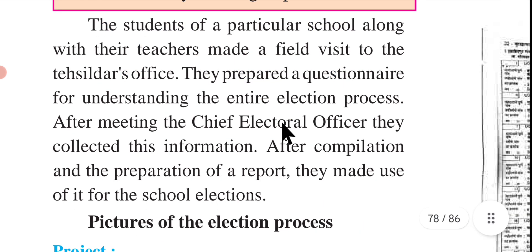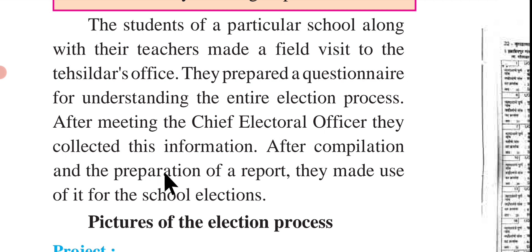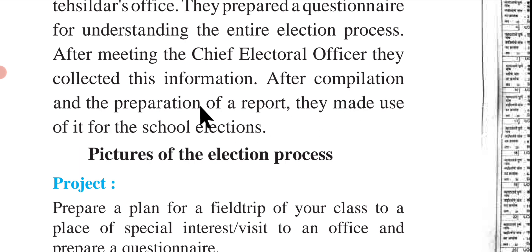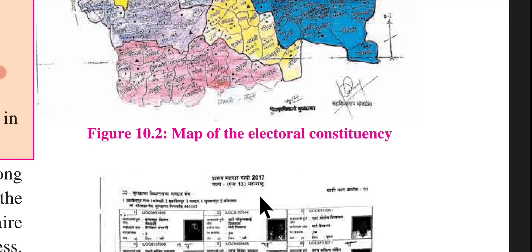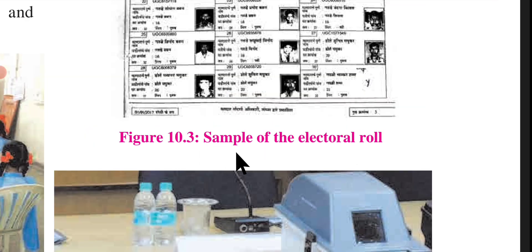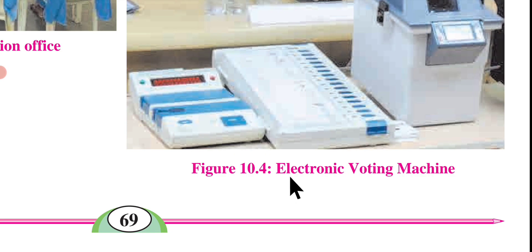The students of a particular school, along with their teachers, made a field visit to the Tehsildar's office. They prepared a questionnaire for understanding the entire election process. After meeting the chief electoral officer, they collected information, and after compilation and preparation of a report, they made use of it for the school elections. Project: Prepare a plan for a field trip of your class to a place of special interest — visit to an office, prepare a questionnaire, visit to the election office, map of the electoral constituency, sample of the electoral roll, and electronic voting machine.